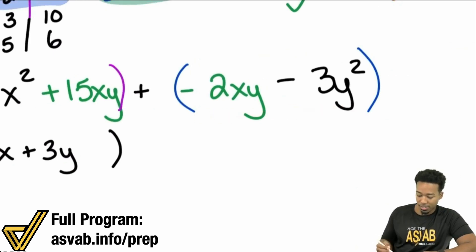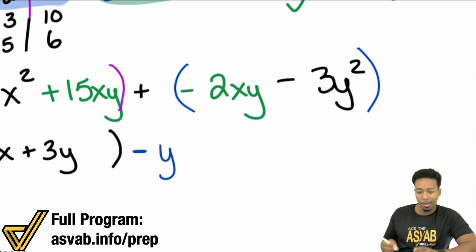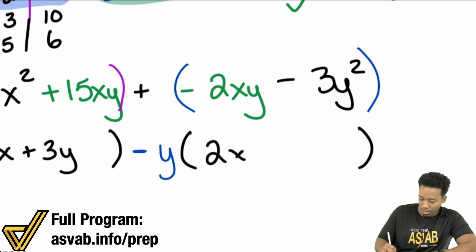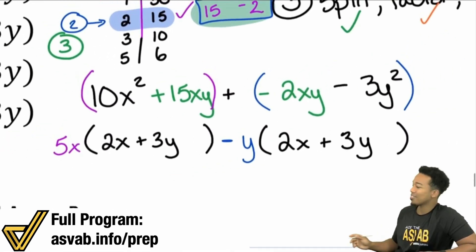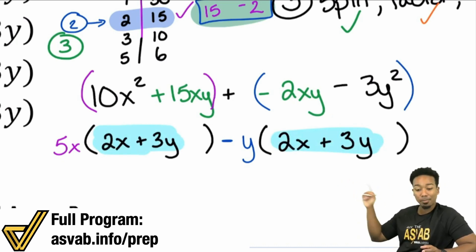For the second group, −2xy − 3y²: both terms are negative and both share a y, so pull out negative y. Taking out the negative and the y from −2xy leaves 2x, and from −3y² leaves 3y. That gives us −y(2x + 3y). Notice that both groups have the same inner binomial, 2x + 3y — that's how you know you're on the right track.